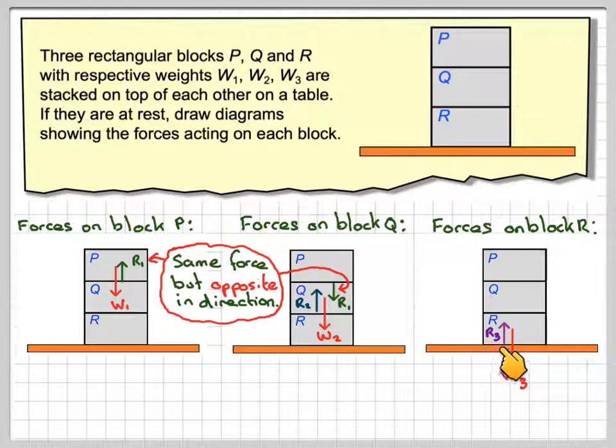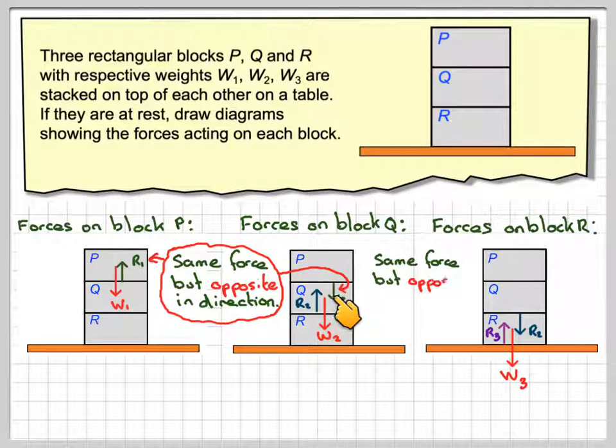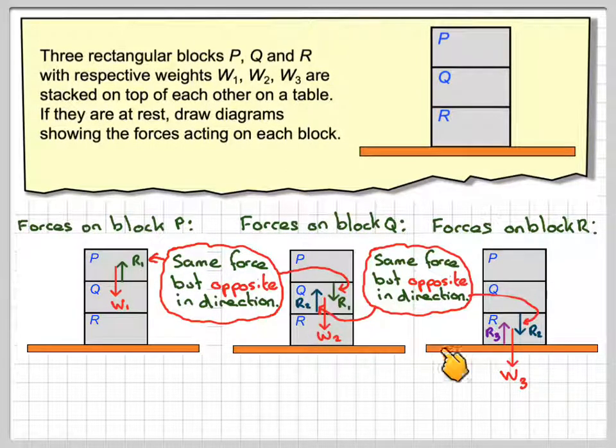There will be the reaction between R, block R, and the table, which we're going to call R3. And then there will be the same idea here, this reactional force here will be the same, but acting downwards in this case. So this will be Q acting on R.